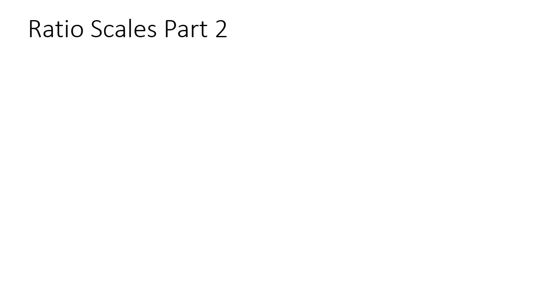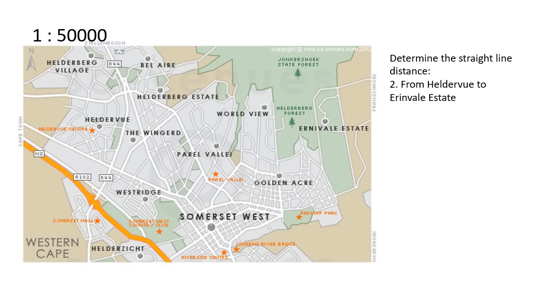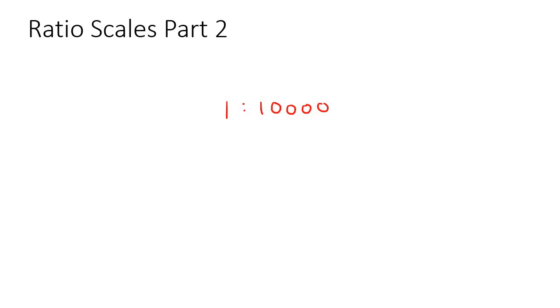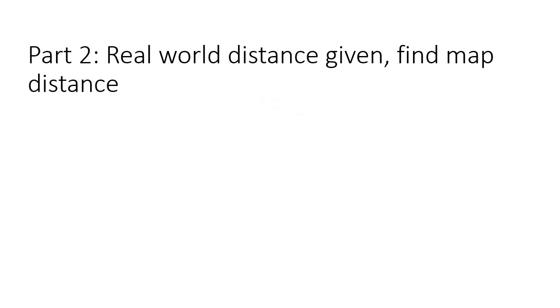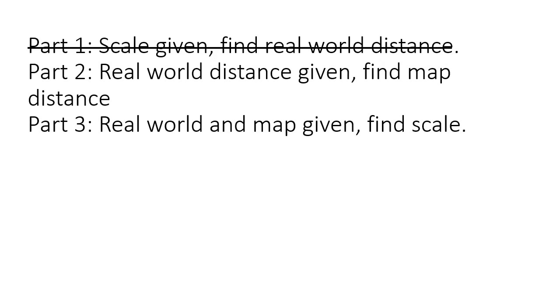In the previous lesson we started looking at ratio scales — things like one to 10,000 — and we looked specifically at using a map. Remember, we looked at those maps and calculated some distances using a ruler. We said there were three different parts, and we looked at part one in the first lesson: scale given, find the real world distance.